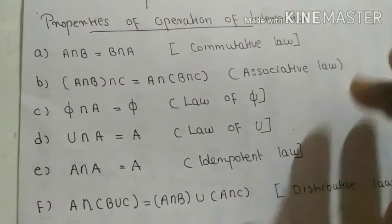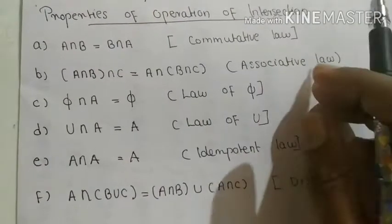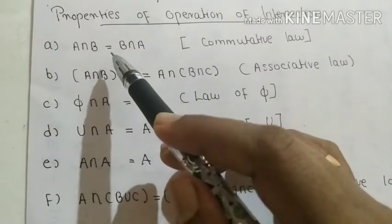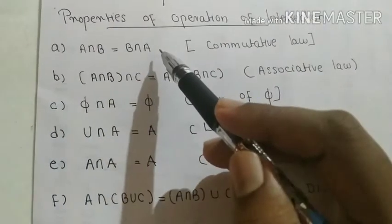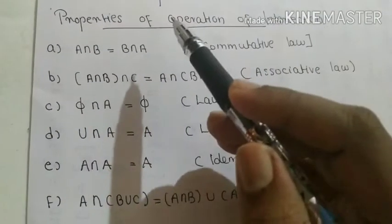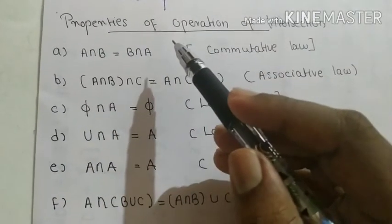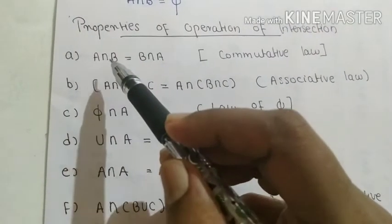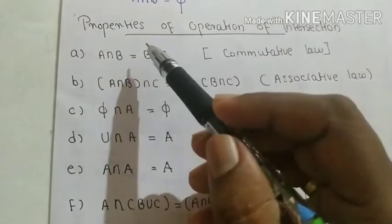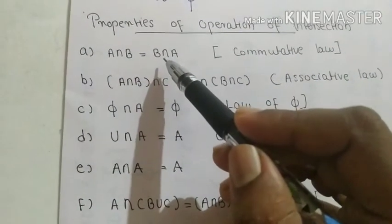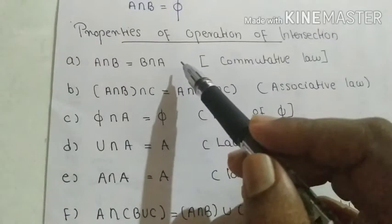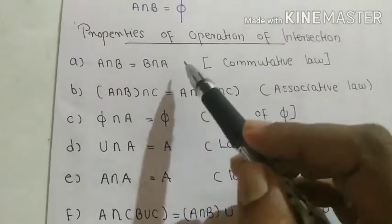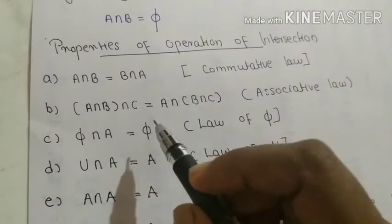Now we move to some important properties of the intersection operation. The first property is that A intersection B is always equal to B intersection A, since intersection means the elements common to both sets. This property is known as the commutative law.